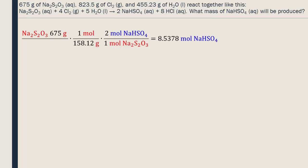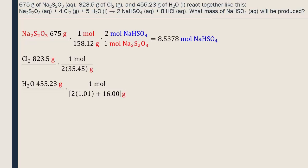Now we do the same thing for the other reactants. We calculate the molar mass, then by dividing by the molar masses, the grams cancel out. Now we multiply each molecule by the stoichiometric coefficient of the molecule we're looking for, and divide by the coefficient of the molecule that we started with. Now our answer is in moles of NaHSO4. To find the answer, we multiply all the numbers on top and then divide by the numbers on the bottom.